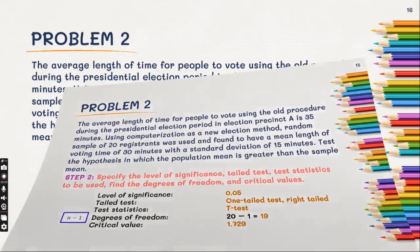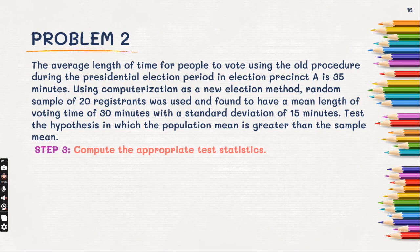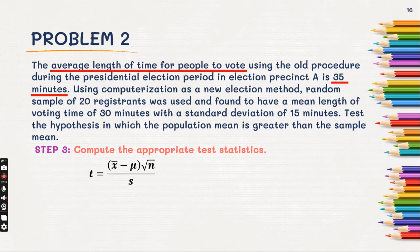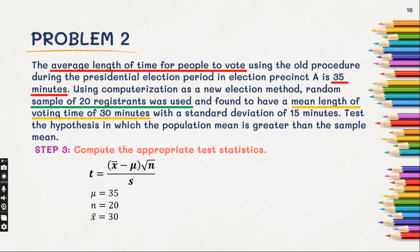Step number 3: compute the appropriate test statistics. Here is our formula. Let us identify the values. The average length of time for people to vote is 35 minutes, our sample size is 20, our sample mean is 30, and the standard deviation is 15.